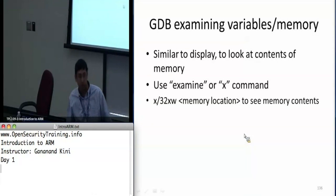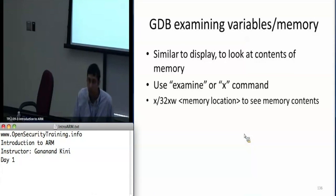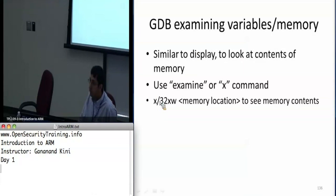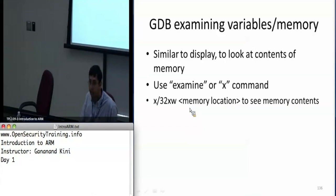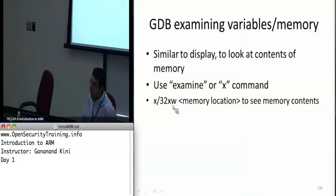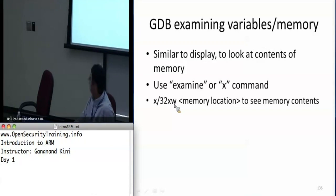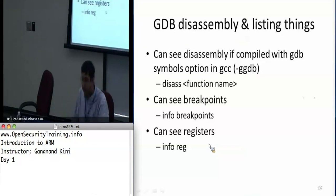To display or look at memory contents you use the 'x' or examine command. The examine command takes a format string — if I want to look at a particular memory location and I want to look at 32 words in hex, I would use '32xw', which means: count of 32, print values in hexadecimal, and print them a word at a time. I'll show you more examples of this in a little bit.